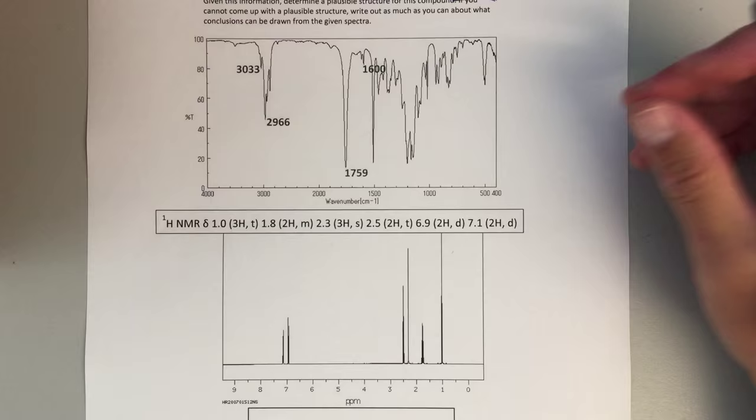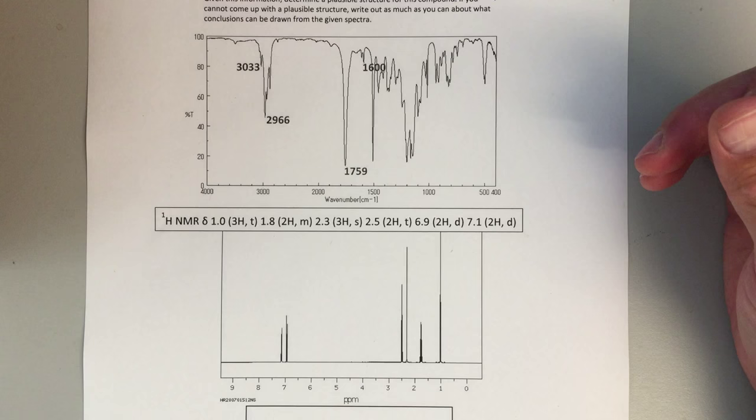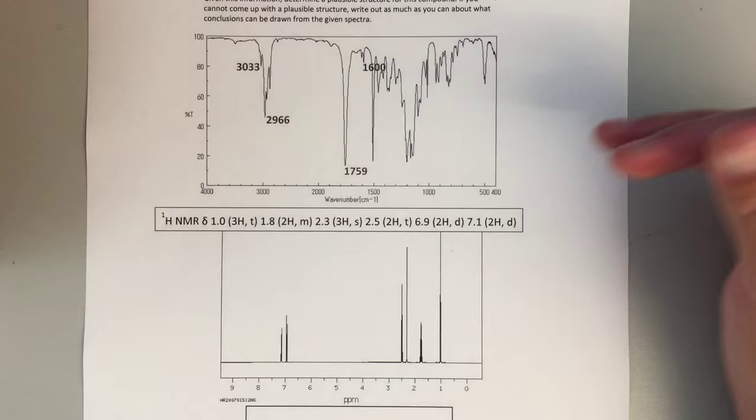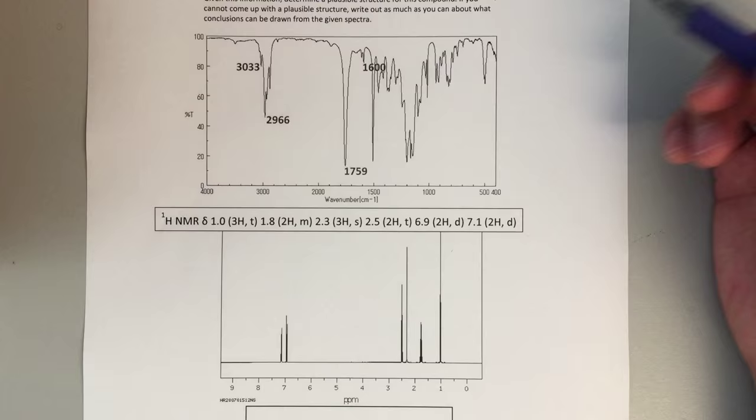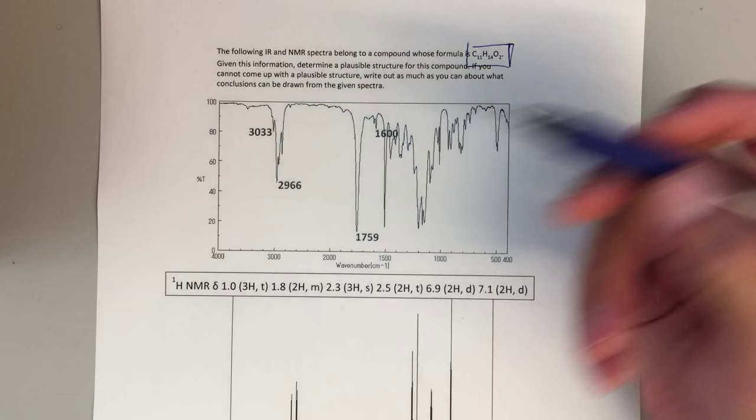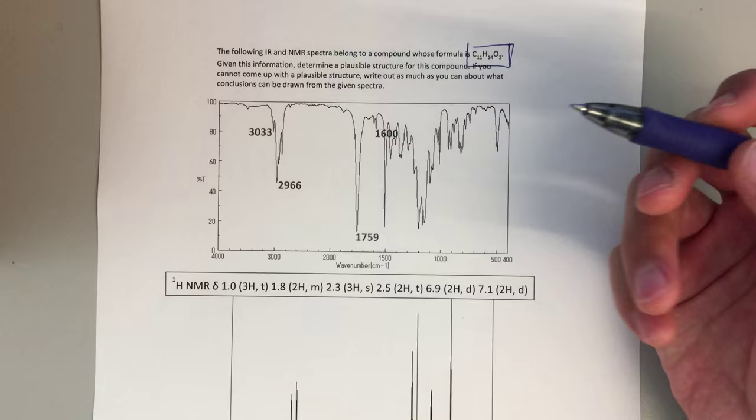So I'm going to talk through the strategy behind a problem like this, how I'd like you to write everything out, and then how we can come to a plausible structure for a final product and check to make sure that everything makes sense, that we're proposing something that is consistent with the data. Okay so let's get started. The first thing I would do is look at my IR spectrum and label what I see.